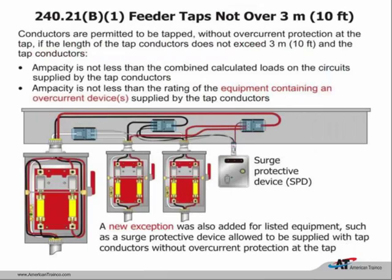Article 240 covers overcurrent protection with three tap rules: the 10-foot, 25-foot, and 75-foot tap rule. If certain conditions are satisfied, equipment can be installed with no overcurrent protection. An exception has now been added for surge-protective devices at the service—they can be tapped off larger conductors with no overcurrent protection. With the advent of electronic equipment entering our facilities, surge-protective devices are extremely important. Two code cycles ago, the transient voltage surge suppressor and the surge-protective device were combined into one article. These devices help against transients, dips, and swells to protect electronic equipment.